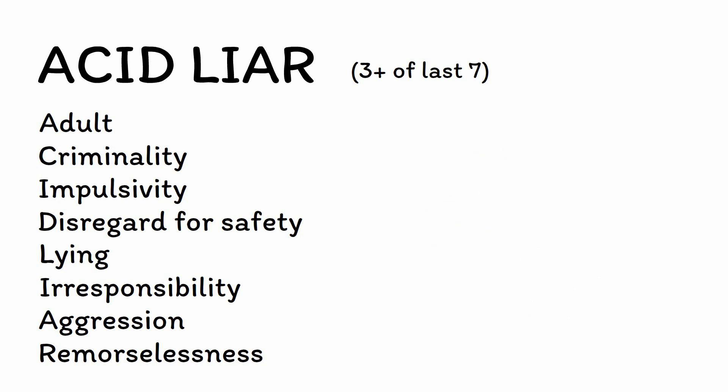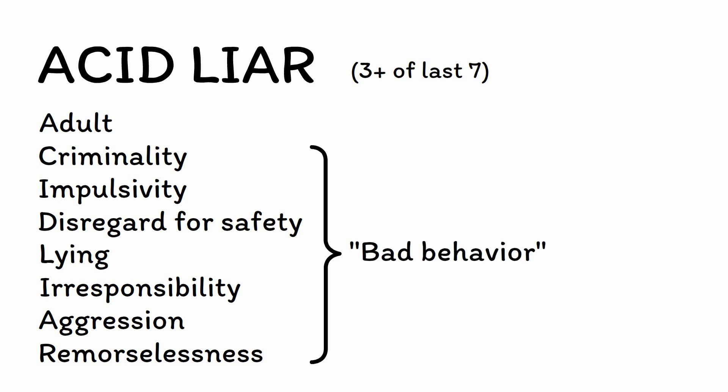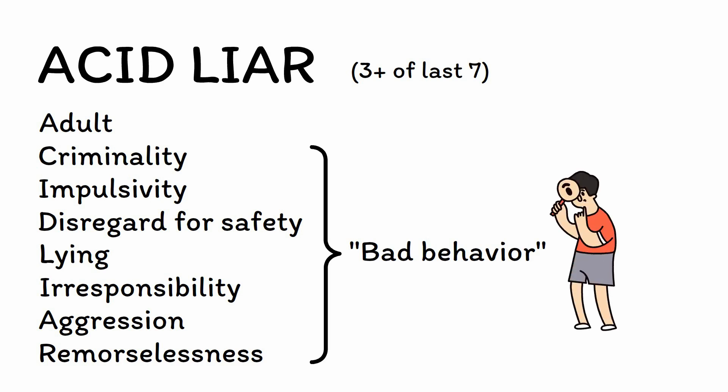Those are the diagnostic criteria for ASPD. If you look at them closely, you'll realize that they are all basically just descriptions of different forms of bad behavior. By keeping the diagnosis rooted in objectively observed behaviors, the DSM has made ASPD a reliable disorder, meaning that two different clinicians will generally agree on the diagnosis. However, the downside is that it does not account for the less objective — and ultimately probably more relevant — question of why someone is engaging in this bad behavior. After all, people commit antisocial behavior for any number of reasons.